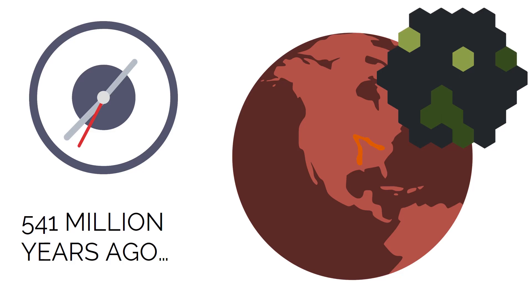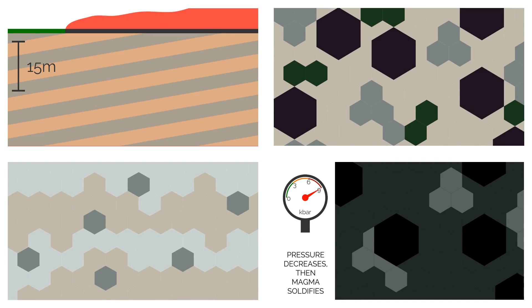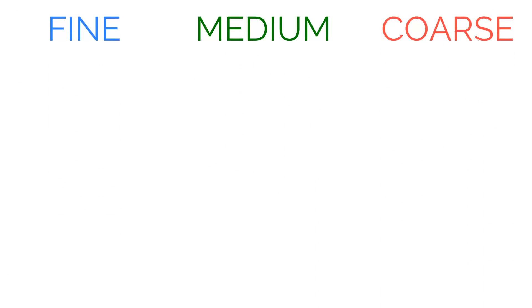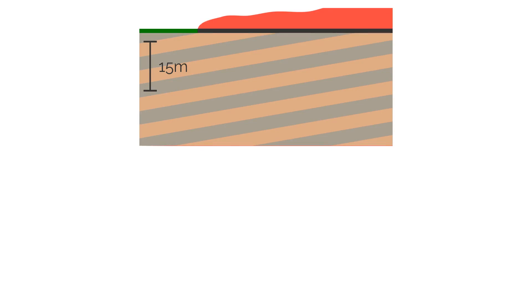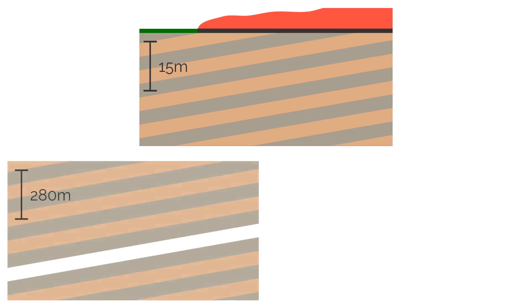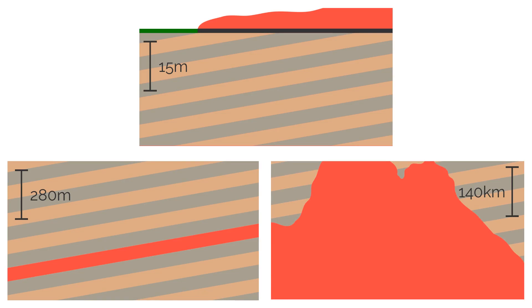Igneous textures also provide a lot of information about how a rock formed — they are a record of the cooling history. There are four main textures: equigranular, porphyritic, flow-banded, and vesicular or amygdaloidal. Equigranular simply means that all of the grains are the same size — they can be fine, medium, or coarse, so long as all of the grains are the same. Fine means the magma was extruded onto the surface, making it a volcanic rock. Medium suggests a shallow hypabyssal intrusion just below the surface, and coarse indicates a large intrusion, forming plutonic rocks.